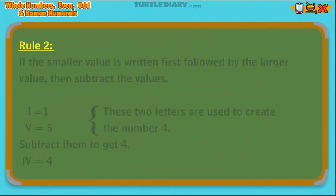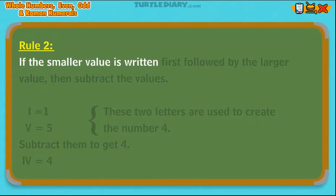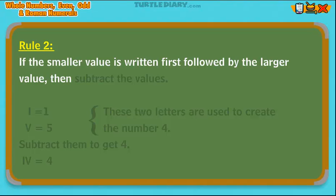Rule 2: If the smaller value is written first, followed by the larger value, then subtract the values. Let's look at how we would write the number 4. The Roman numeral for 4 is IV.